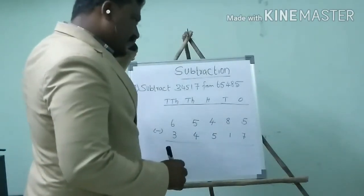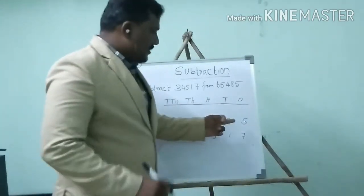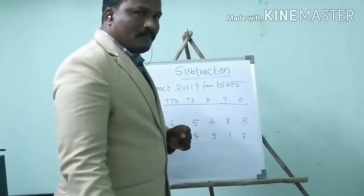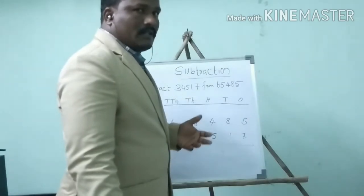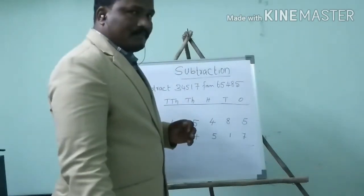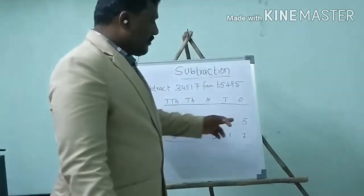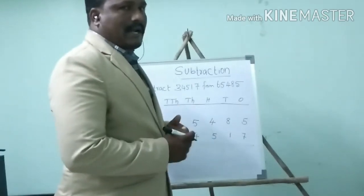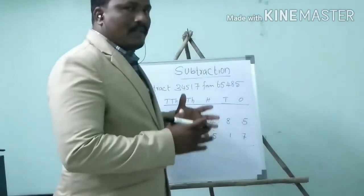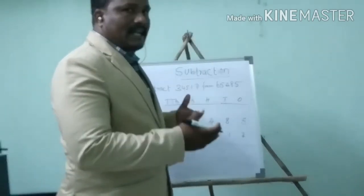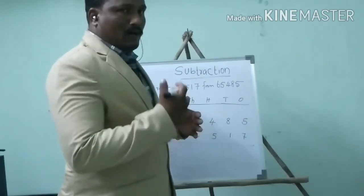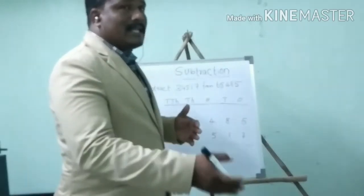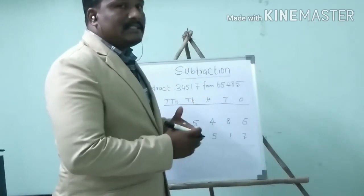Now we will subtract — first the ones place. Minuend is smaller than subtrahend. Is it possible to subtract? No. Because the minuend must always be bigger than the subtrahend for easy subtraction. When minuend is smaller than subtrahend, we need to borrow.